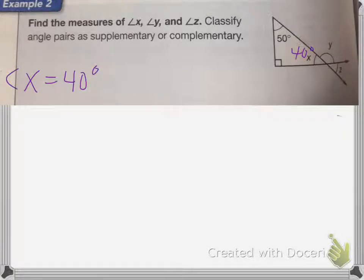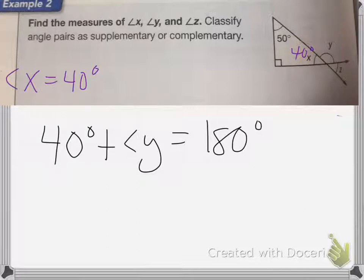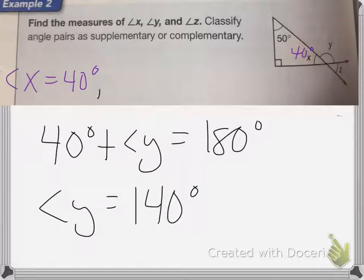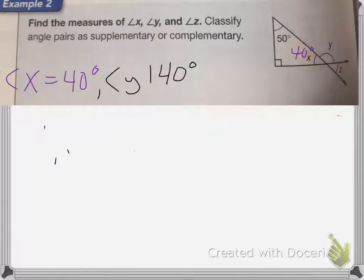Now I need to figure out angle Y and angle Z. Angle Y plus angle X equals 180 degrees — that's a straight line. So if I have 40 degrees plus angle Y, I need to get 180 degrees. Angle Y is going to equal 180 degrees minus 40, which is 140 degrees.